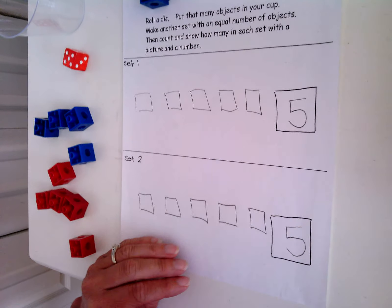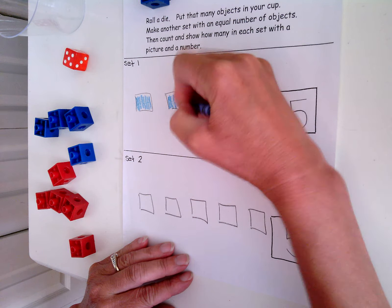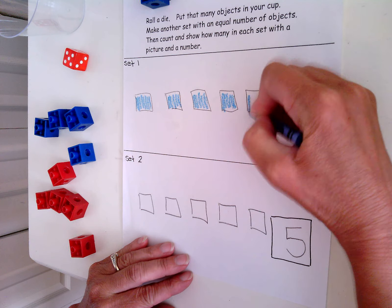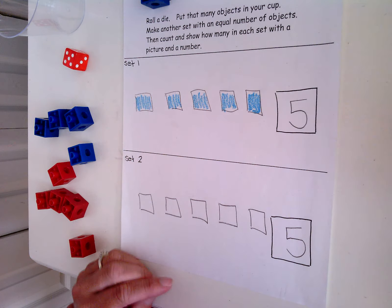And I would color these red, and then you could also draw lines to show that you know they are equal because everyone has a partner.